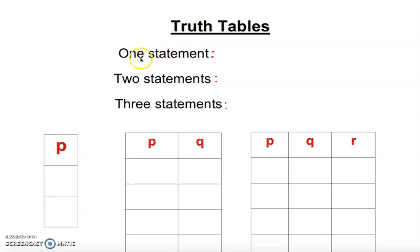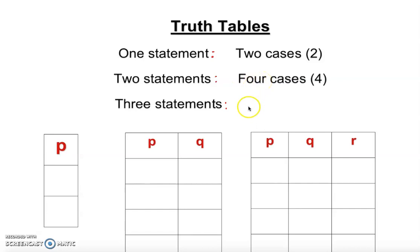If you have one statement, there are always two possibilities. For example, the statement 'I go to college' has two options: I go to college, or I don't go to college — so two cases. One statement gives two cases. If you have two statements, it's going to be four cases. If you have three statements, it's going to be eight cases. One letter, even if the same letter is repeated, still counts as one statement.